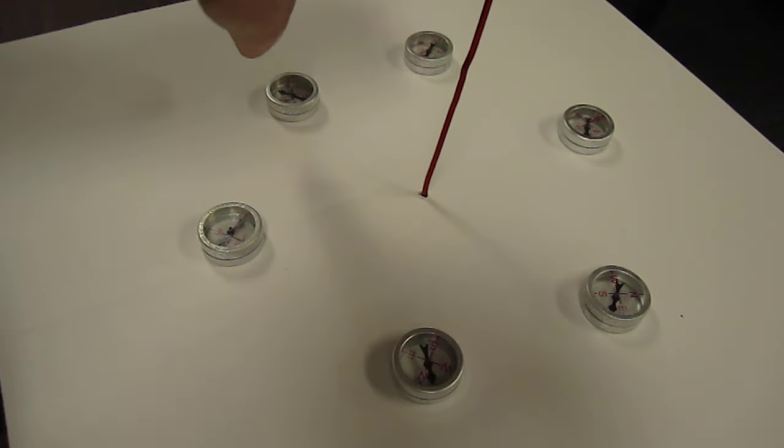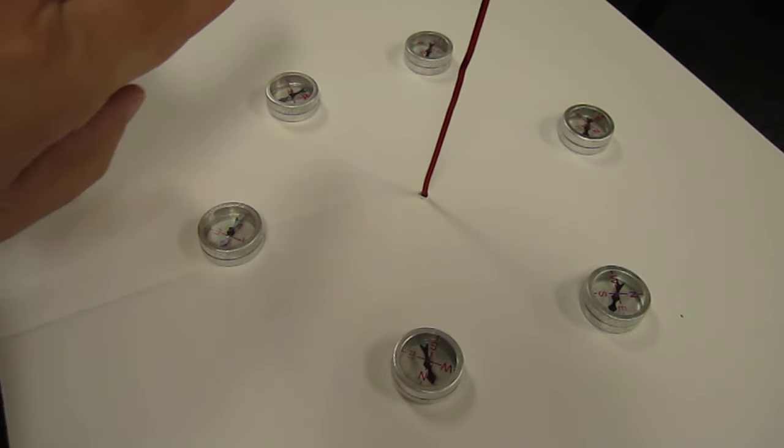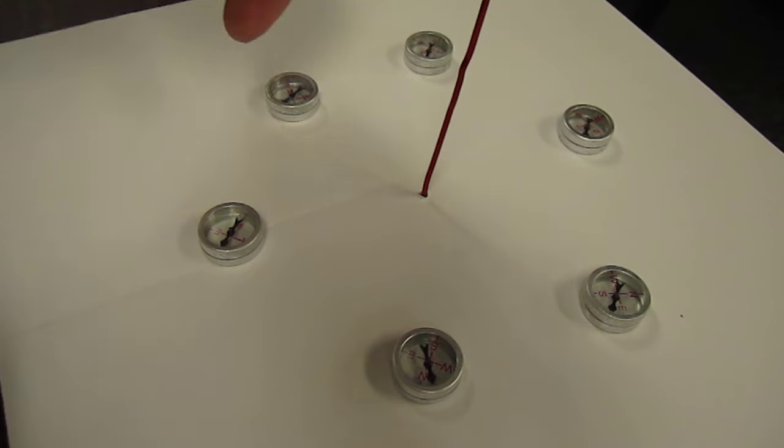This one ended up pointing that way. The Earth's field is pointing this way. The wire is trying to point the field that way. And I end up getting some sort of component that points away from the wire.